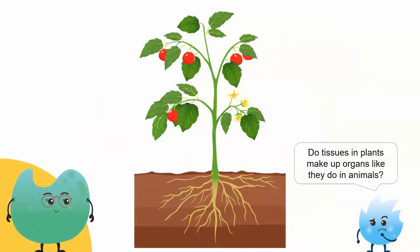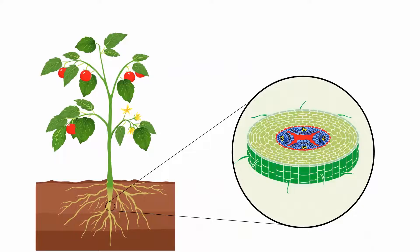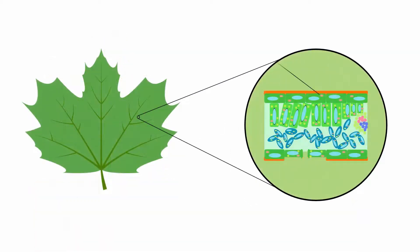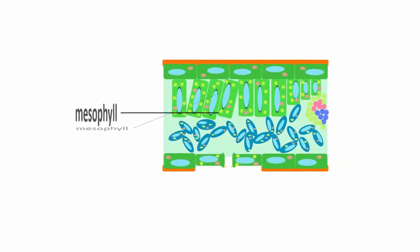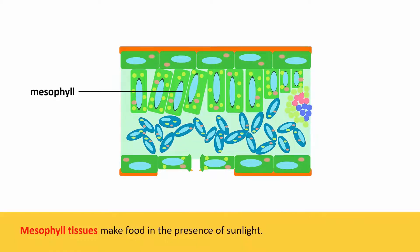Do tissues in plants make up organs like they do in animals? Oh yes, plants also have organs that are made up of different tissues. In plants, roots are organs that are made up of epidermal tissue, ground tissue, and xylem tissue. Together, these tissues form roots, an organ that holds the plant firmly into the soil and absorbs water from the soil for the plant. Leaves are other organs that are made up of epidermal, vascular, and mesophyll tissues. Mesophyll tissues consist of green cells that contain chlorophyll. This tissue makes food in the presence of sunlight through the process of photosynthesis.